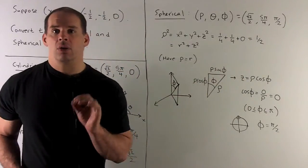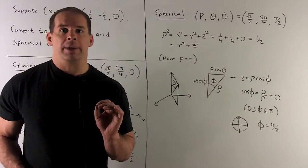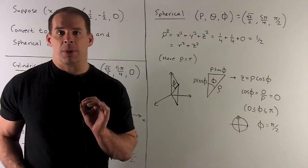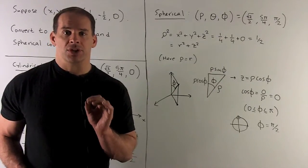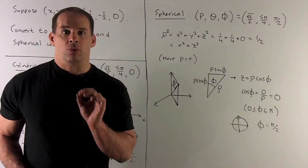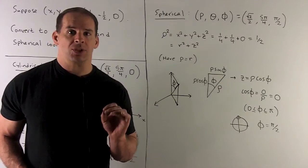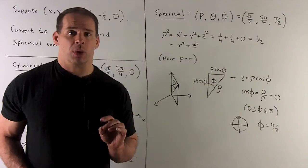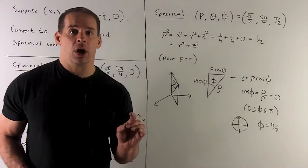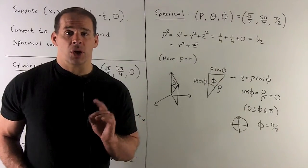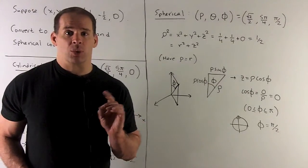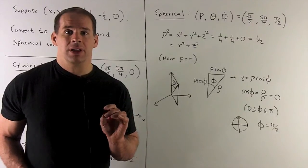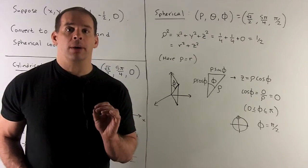So I just need rho and phi. Rho is just the distance from the origin to our point. So rho squared equals x squared plus y squared plus z squared, which equals one-fourth plus one-fourth plus zero, or a half. So rho is going to be the square root of that, which is square root of two over two — the same manipulation we did for r.